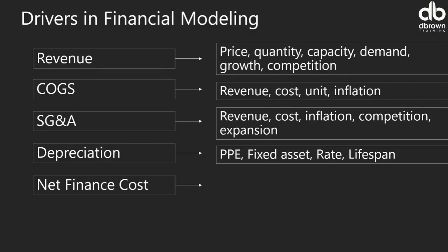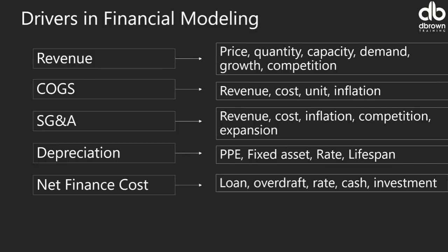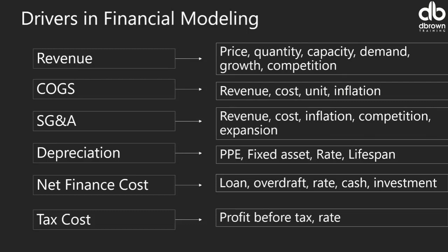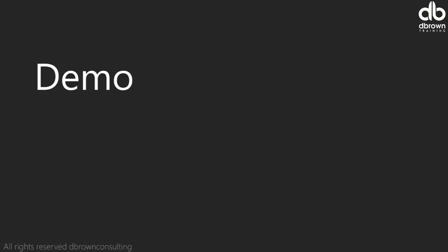For net finance cost — the difference between finance income and finance cost — you need to ask what the firm is using to finance their business. Do they have loans or overdrafts? What is the interest rate? What is the cash in the business and the interest income on investments? For tax, you need to consider the profit before tax as well as the rate of tax. Now let's demonstrate our 10 different forecasting methods.